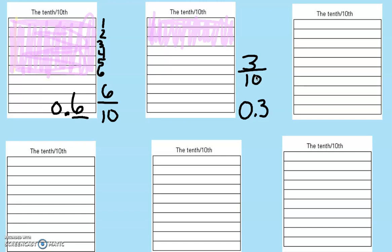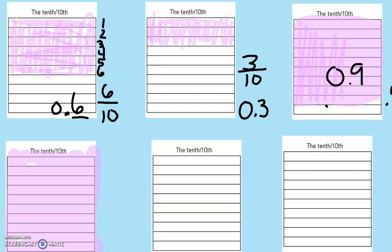You try one: think about how many rods I would need to shade in for 0.9. You can pause the video and think about it. Nine tenths would be nine rods — all but one of them shaded. Now try another: I'm going to shade in a full flat — how would I write that as a decimal? The answer is 1.0, because this is one whole, or ten tenths equals one whole.